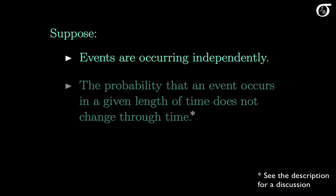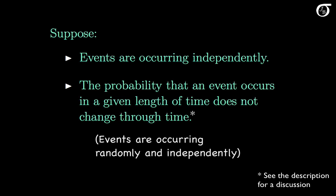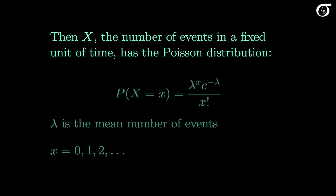Suppose events are occurring independently. More specifically, knowing when one event happens gives no information about when another event will occur. And the probability that an event occurs in a given length of time does not change through time — in other words, the theoretical rate at which the events are occurring does not change through time. We sometimes say that the events are occurring randomly and independently. If these conditions hold, then the random variable x, which represents the number of events in a fixed unit of time, has the Poisson distribution.